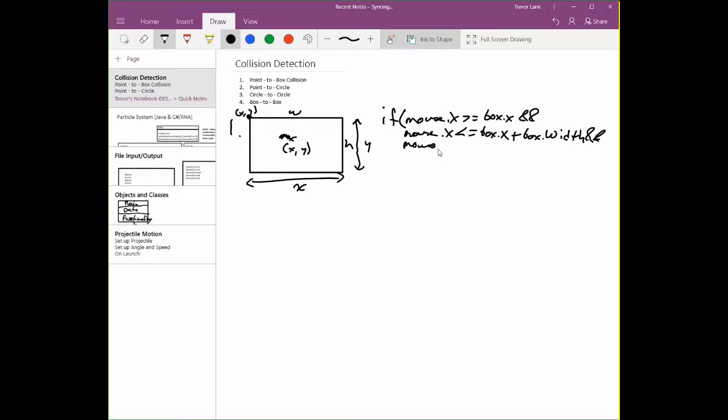if mouse dot y is greater than or equal to box dot y, and last but not least, thumb keeps hitting my clicker on my pointer here,